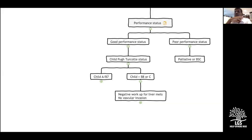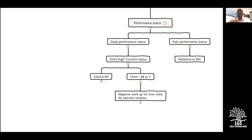HCC is not normally a PET-avid tumor, so how is PET CT used? PET CT cannot be used for diagnosis of HCC. Once a diagnosis is established, it can be used to diagnose metastasis and assess FDG avidity — tumors with high avidity are an indirect marker of biological aggressiveness. Without PET CT, the standard recommended workup is chest CT and bone scan.